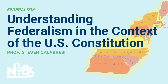Article 4, Section 4 — the Guarantee Clause, or Republican form of government clause — says the United States shall guarantee to every state a Republican form of government, and shall, in case of invasion or insurrection upon the invitation of the legislature or the governor, militarily intervene to protect that form of government. It does give Congress an enumerated power to guarantee to the states a Republican form of government.